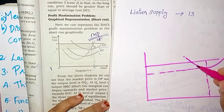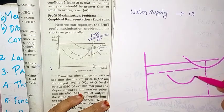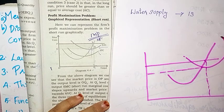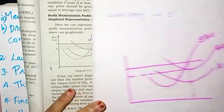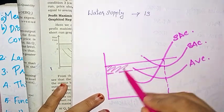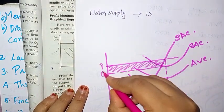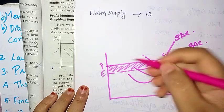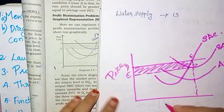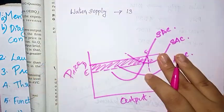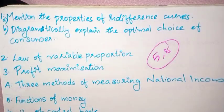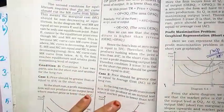The next one is SMC — Short Run Marginal Cost. If you want to go to this point, you will touch it. That's why we use SAC. Then AVC — Average Variable Cost. If you want to use SAC in microeconomics, in the second chapter, you will see this point on the diagram.